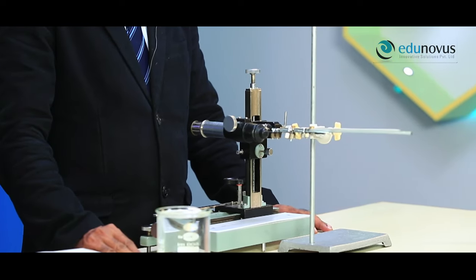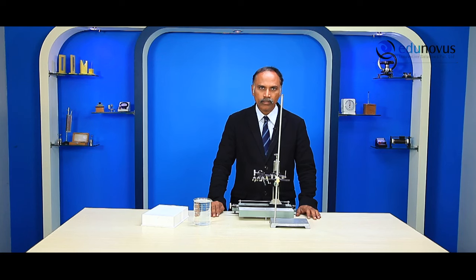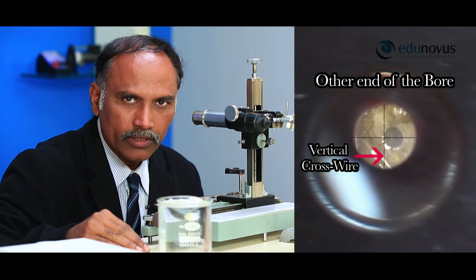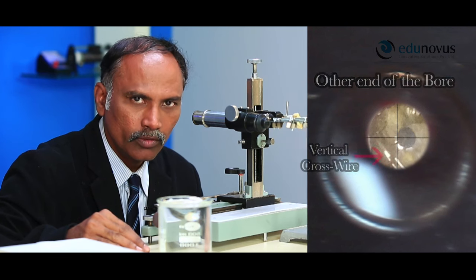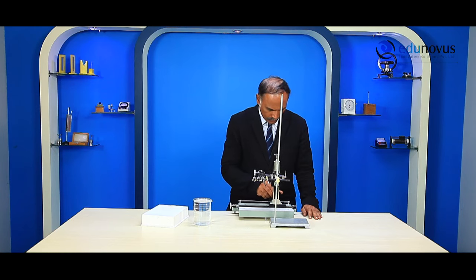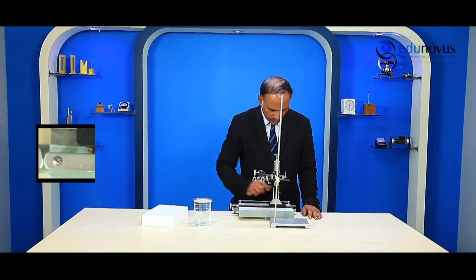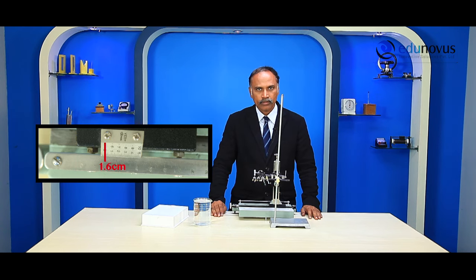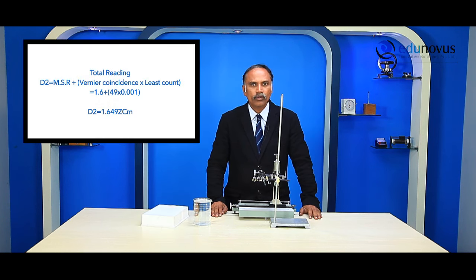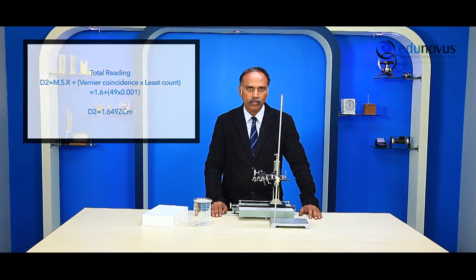Looking through the eyepiece, we move the microscope until the vertical cross wire touches the other end of the bore. You can clearly see that the vertical cross wire now touches the other end. Note down the reading of the horizontal scale. The main scale reading is 1.6 centimeters and the vernier coincidence is the 49th division. Therefore, the total reading is 1.649 centimeters. Note this reading as D2. The difference of D1 and D2 gives us the diameter of the bore.